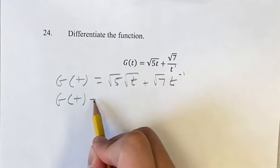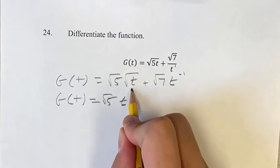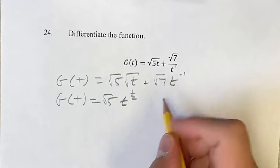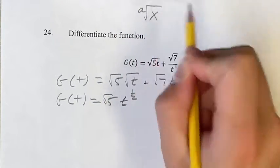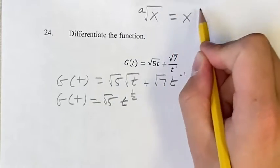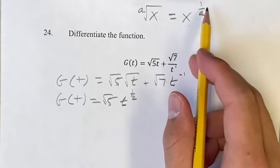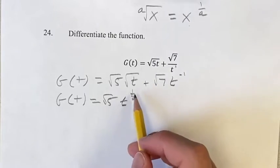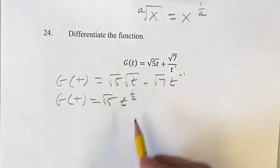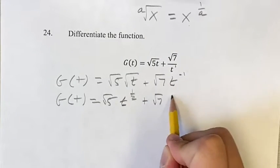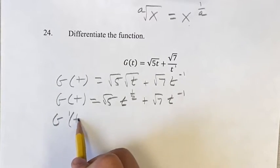One more step: root 5 times t to the 1 half — the square root of t is t to the 1 half, because the a-th root of x is x to the 1 over a, and here a is 2, so it's t to the 1 over 2, which is 1 half — plus square root of 7 times t to the minus 1. Now we can use our power function rule to find the derivative g prime of t.